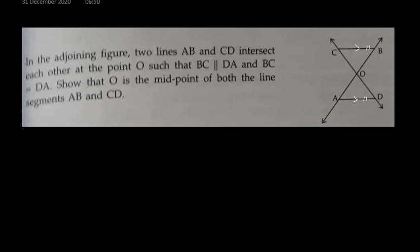We have to show that O is the midpoint of both the line segments AB and CD. Here also, you have to prove that triangle OBC and triangle OAD are congruent.